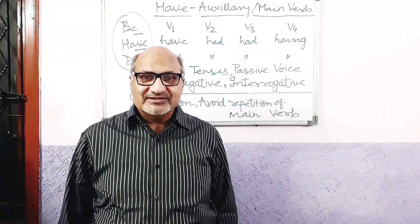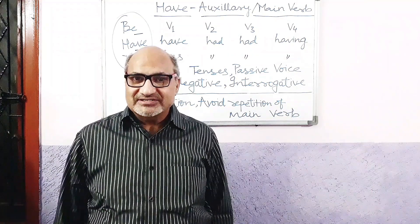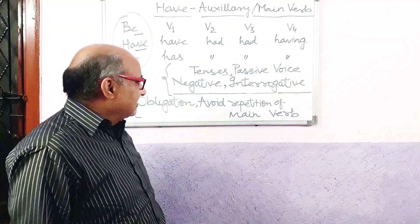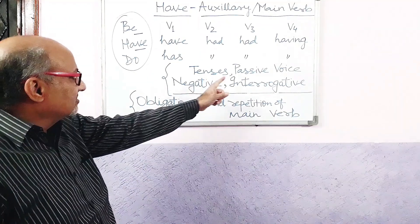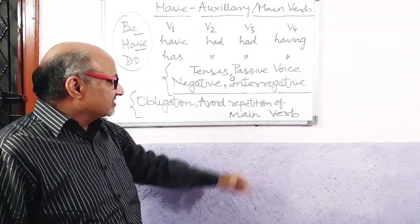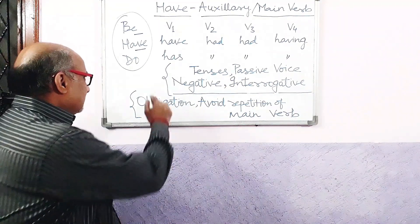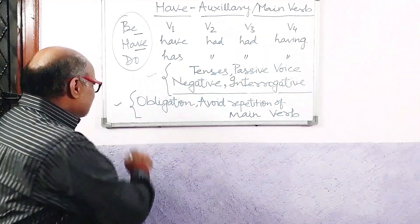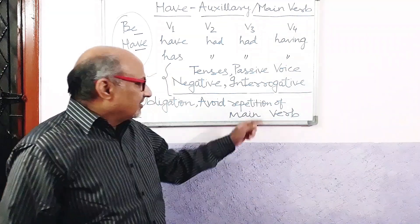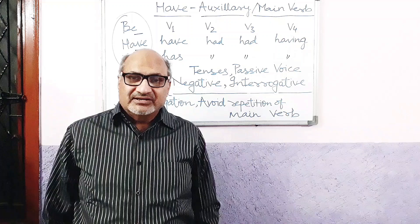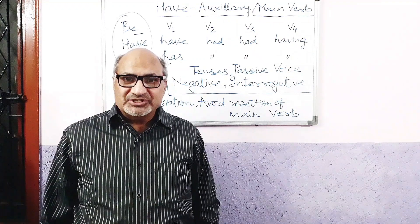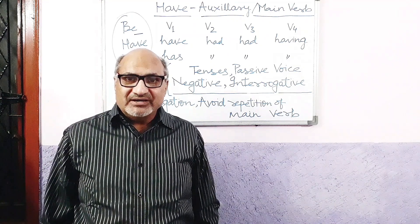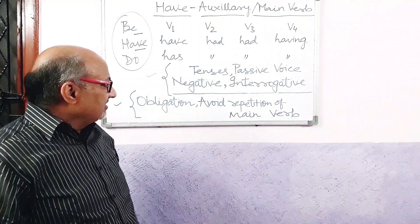It's very interesting to note that 'have' plays multiple roles in the language. At times it is used as an auxiliary verb, and at times as a main verb, as per the requirements of different tense rules, passive, negative, and interrogative constructions — these are the traditional uses. Then there are extraordinary uses: it's also used to denote obligation and to avoid repetition of the main verb. For convenience, we have divided our approach into two parts — Part 1 and Part 2. Under Part 1, we will take up its role as auxiliary verb with respect to the traditional uses.